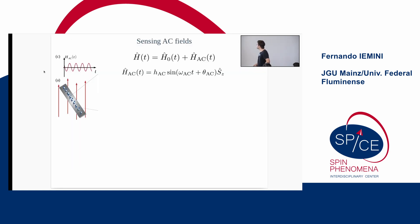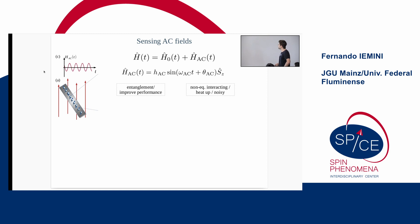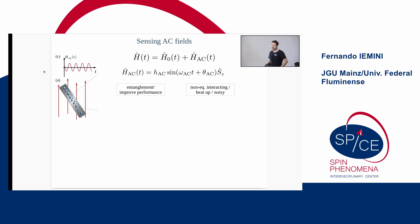Now I'll discuss how to exploit this phase for sensing AC fields and metrological protocols. The idea is to put the sensor in contact with an AC field to be measured. While the internal Hamiltonian has spin interactions and various mechanisms, the AC field roughly adds an external field driving a specific magnetization dynamics. For sensing, entangled particles can improve performance, but interacting Hamiltonians with non-equilibrium dynamics can cause the system to heat up fast, producing a noisy response.